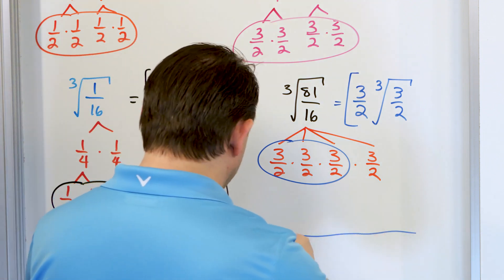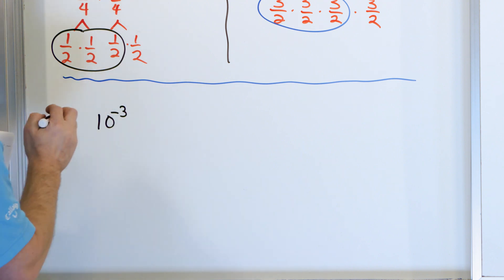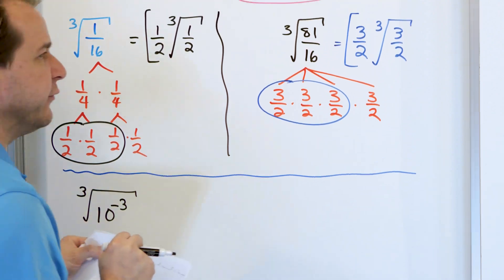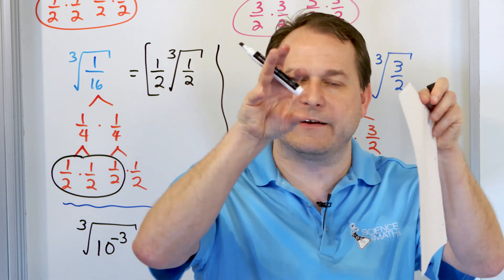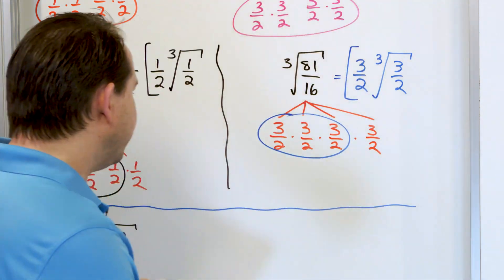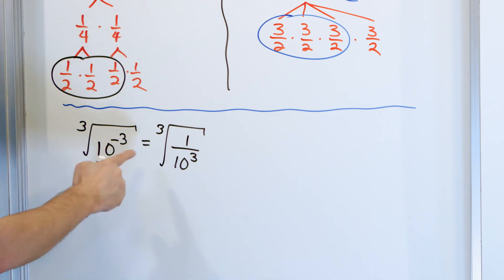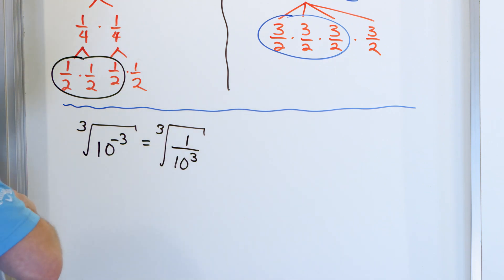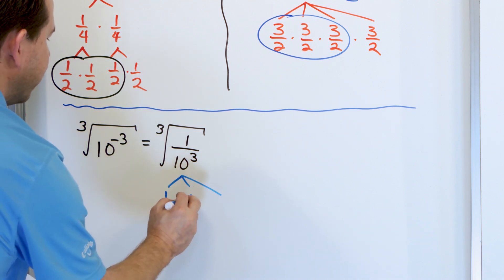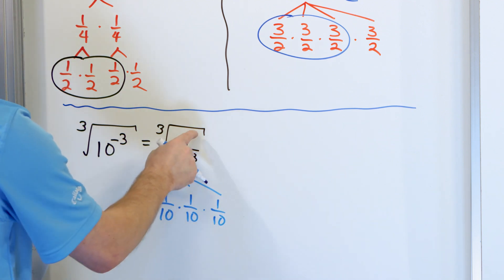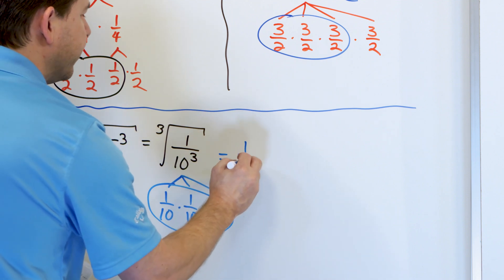Let's work a couple of quick ones. What if we have 10 to the minus 3, and we're going to take the cube root of that? A lot of students, when they see a negative exponent underneath a radical, don't know what to do. But remember: negative exponents are just fractions. You move that exponent to the bottom and change it to positive. So this is really 1 over 10 to the positive 3, and you're taking the cube root of that. Now you can write a factor tree: this is 1/10 times 1/10 times 1/10, because 1 times 1 times 1 gives the numerator and 10 times 10 times 10 gives the denominator. That's exactly a triplet, so the answer is exactly 1/10.